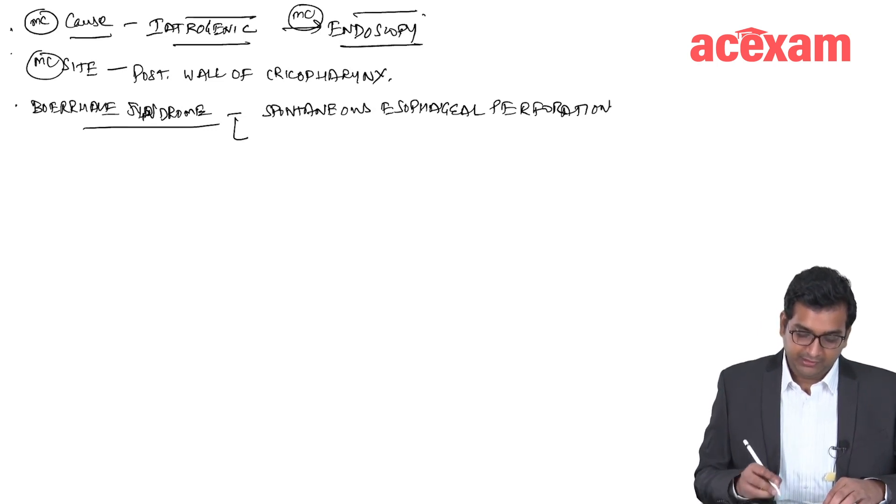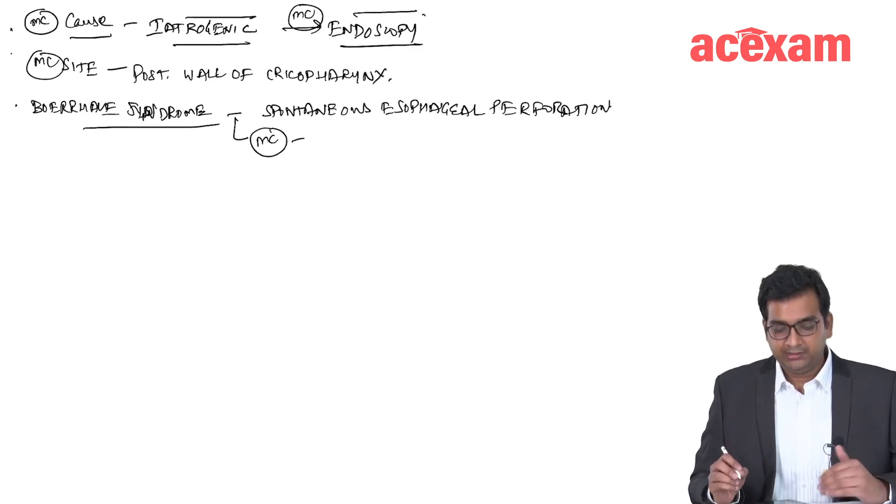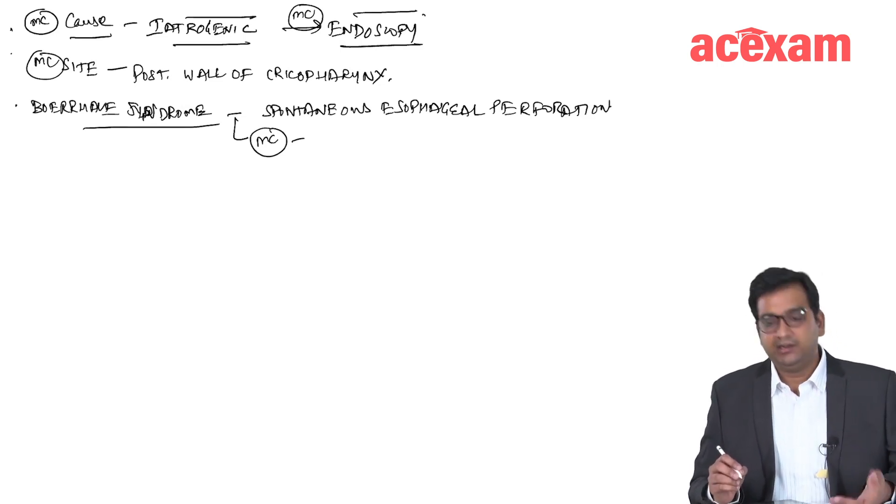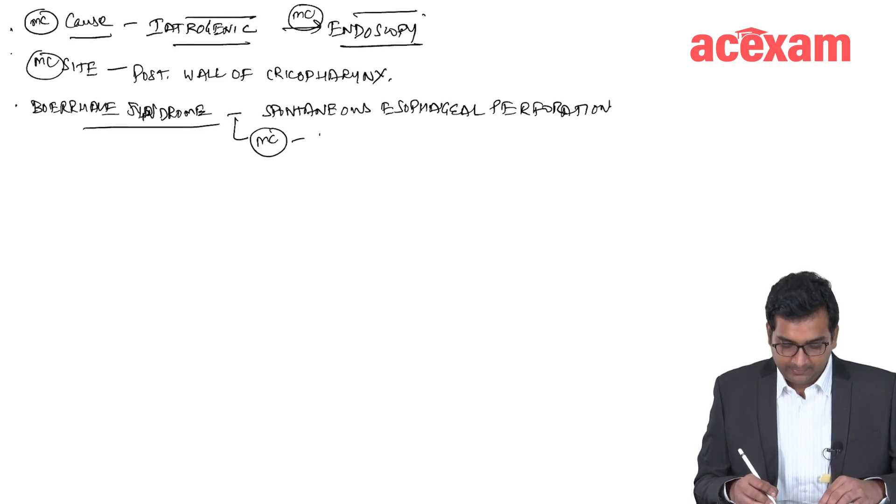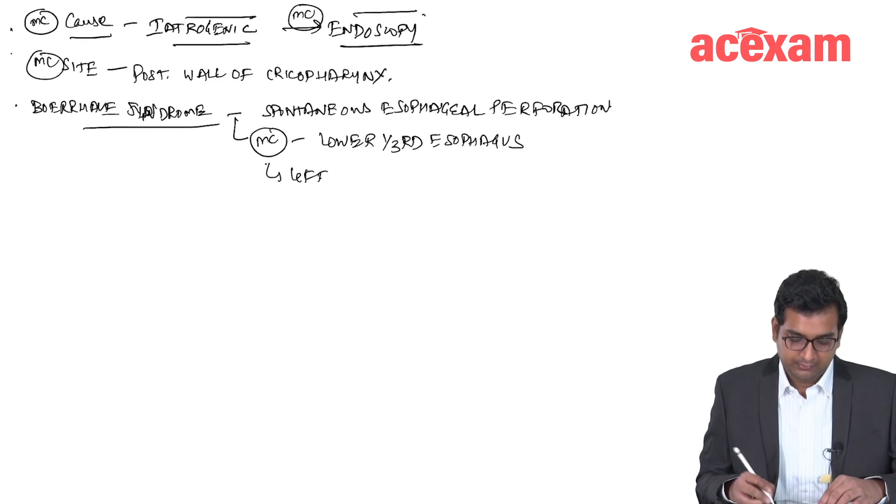What is the most common site of perforation in Boerhaave syndrome? It is lower one-third of the esophagus, generally in the left posterolateral direction. Lower one-third esophagus, left posterolateral direction.